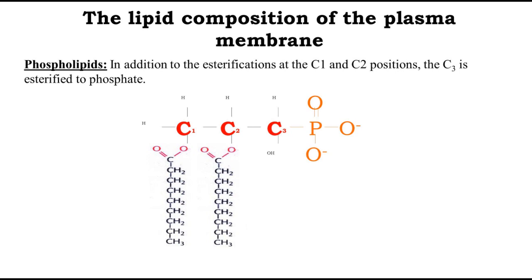The plasma membranes are constituted of phospholipids or glycerolipids because they have glycerol as the basis. This molecule, glycerol, with two fatty acids, a phosphate, and a radical — which gives the name to the phospholipids or glycerolipids — is the basic structure found in the phospholipids of the plasma membrane.